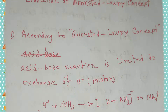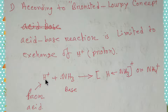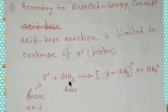The limitation of this concept is that acid-base reactions are limited to the exchange of protons. For example, here you can see a proton reacting with ammonia — ammonia is a base and the proton is coming from an acid. Since ammonia is accepting a proton, this is a base.